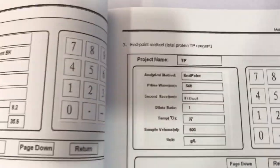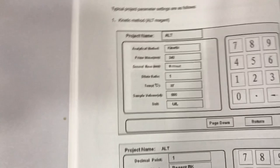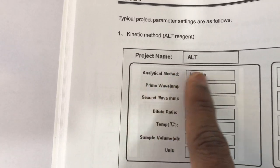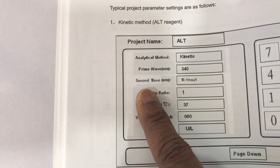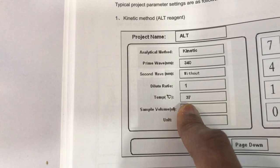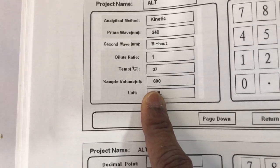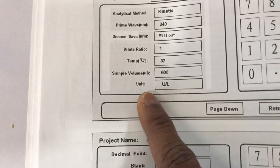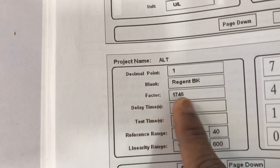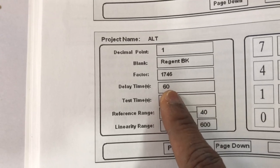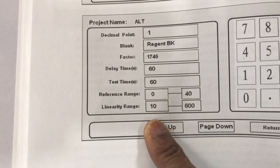Now let's look at a kinetic method — for example, ALT. The analytical method is kinetic. The primary wavelength is 340 nm; no secondary wavelength is needed. Dilution is set to one. Temperature is 37 degrees Celsius — always follow the manufacturer's instructions. Sample volume is 600 microliters. The unit is international units per liter. Set the decimal point to one, do a reagent blank, and the manufacturer provides the factor: 1746.4 for this assay. The delay time is 60 seconds and the test time is 60 seconds.